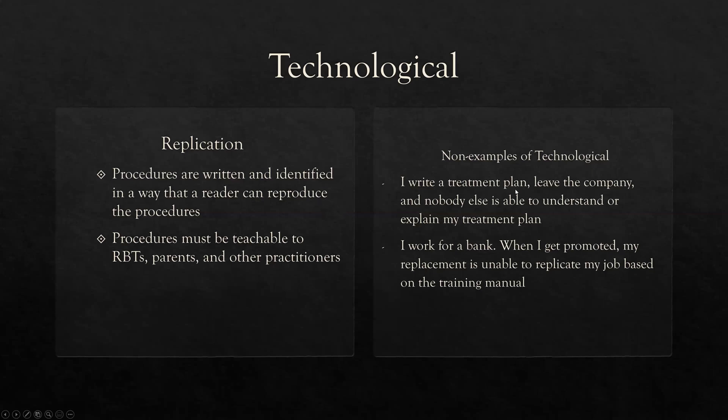A non-example of technological: you leave the company and no one can replicate your treatment plan — that happens all the time. Another example: I work for a bank, get promoted, and my replacement can't replicate my job based on the training manual. Whoever wrote that manual failed to be technological. In ABA especially, we want to build up a database of useful interventions, and they're only useful if other people can do them. Write in a way that other people can replicate.